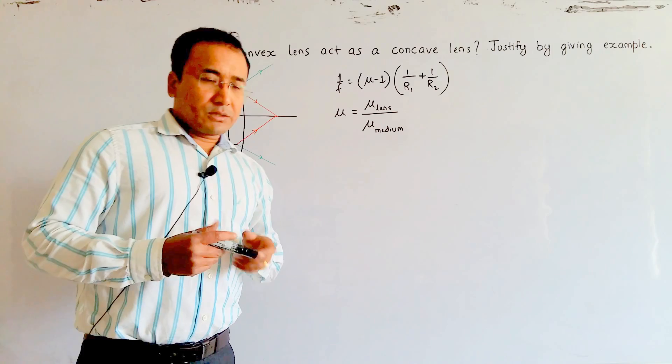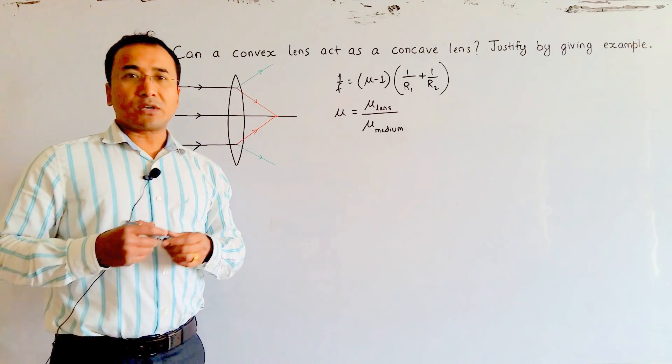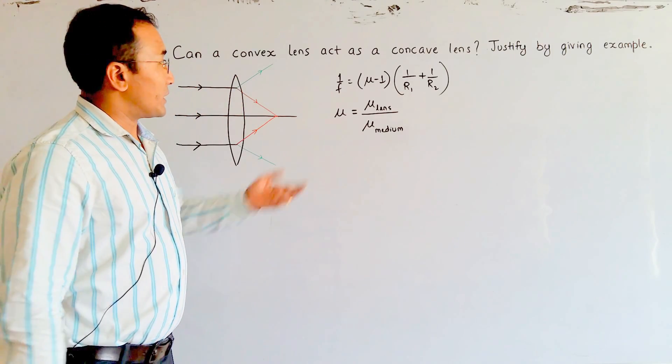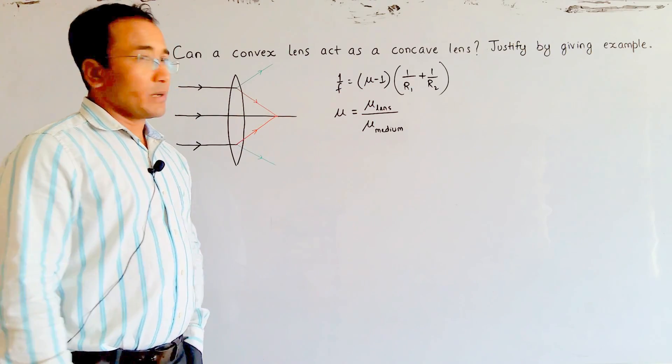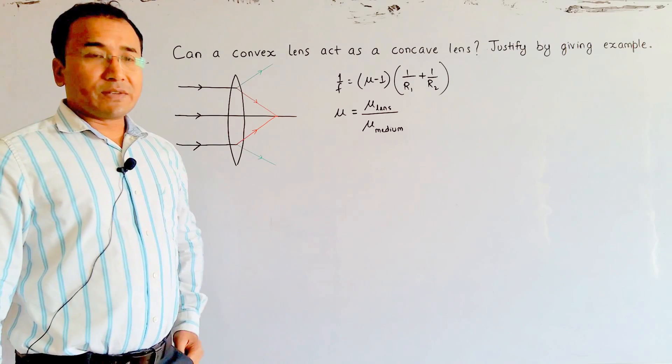This question is answered by the use of lens maker's formula, which is: 1/f = (μ - 1)(1/r1 + 1/r2), where μ is the refractive index of the lens compared to the medium.